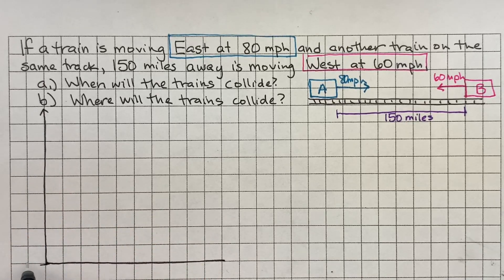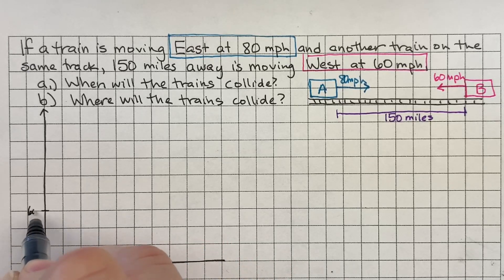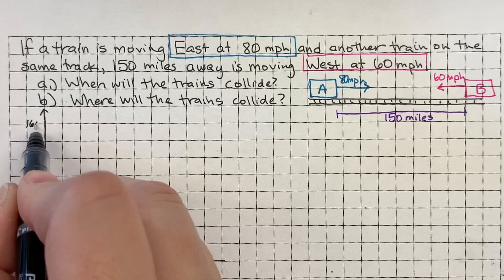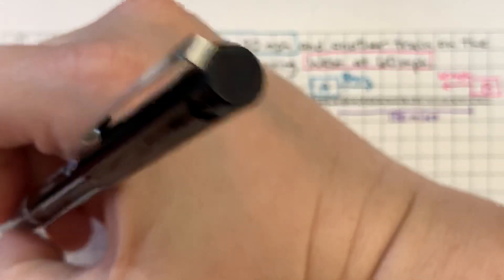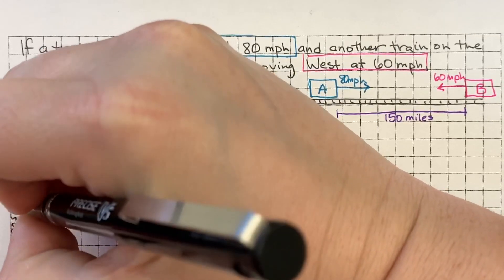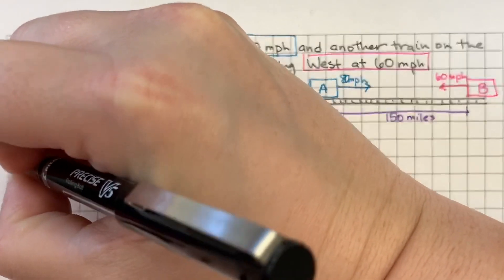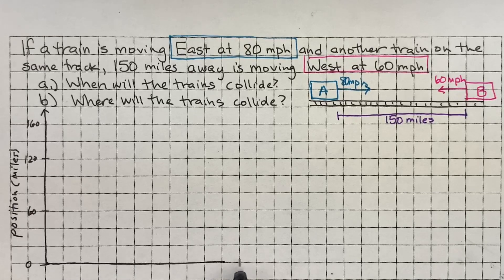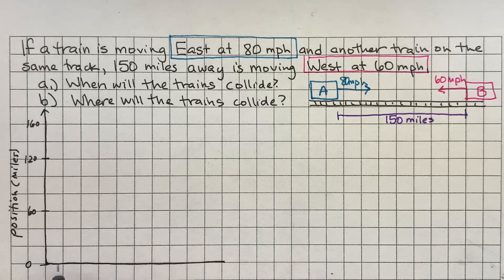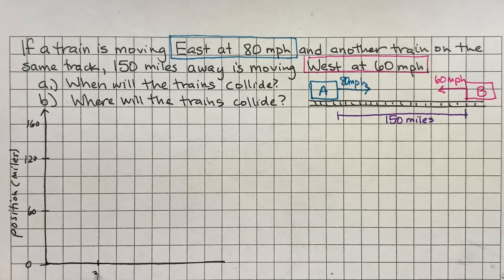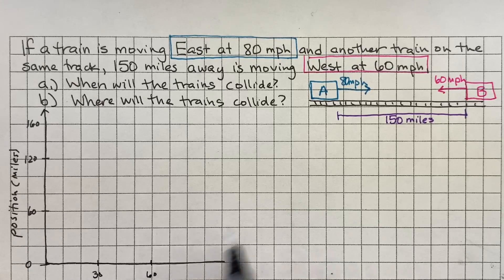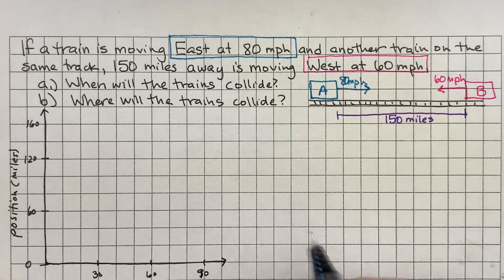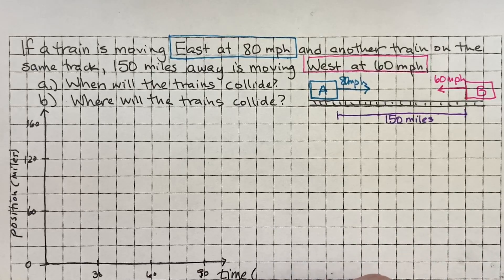So this would be 0, 20, 40, 60, 80, 100, 120, 140, 160. Okay. And this would be position in miles. And I don't know how long it's going to take them, but I'm going to do this in 10 minute increments. So 10, 20, 30, 40, 50. So 60 would be one hour. 10, 20, 30. It should be 90. So this will be time. And I have it in minutes here.